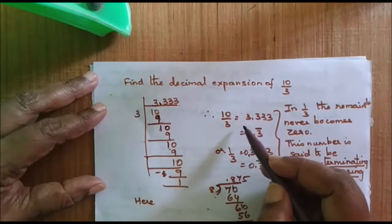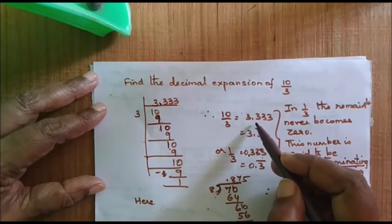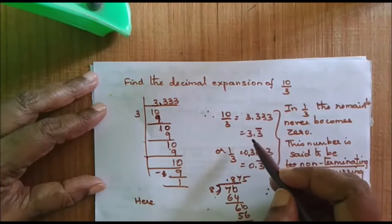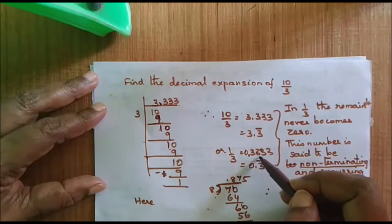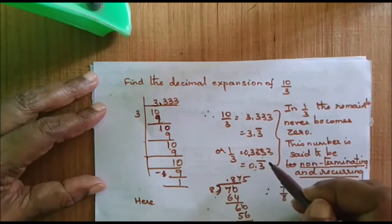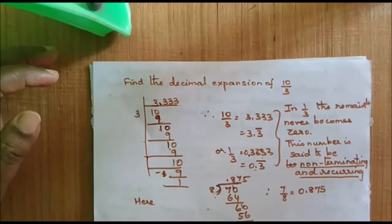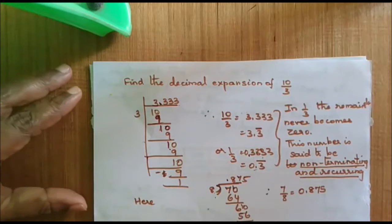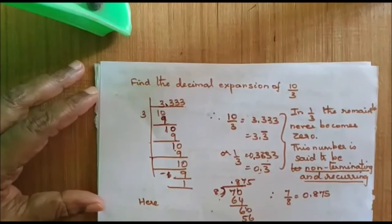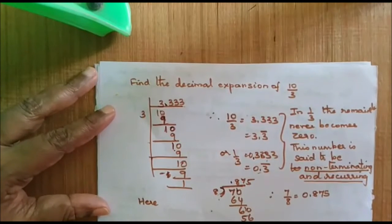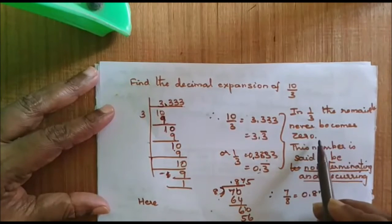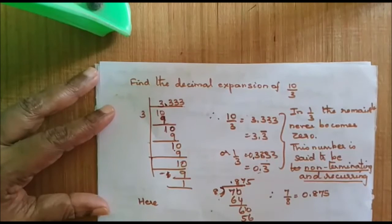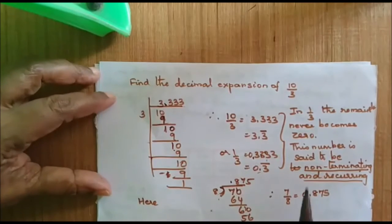So 10 by 3 is equal to 3.333. Or in other words, 1 by 3 is equal to 0.333 or 0.3 bar. I put a bar above 3 showing that the number 3 is recurring. In this decimal, 1 by 3, the remainder never becomes 0 — it goes on. The remainder always comes to be 1. There is no 0.